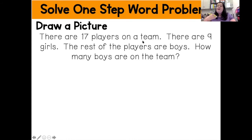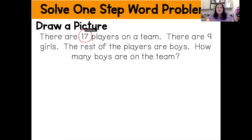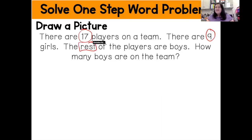Now that I've read my word problem one time, I'm going to use the cubes method to dissect it by going over it again. This time I'm going to be circling my numbers, underlining my question, and boxing in any clue words that will tell me whether I'm going to be adding or subtracting. So there are 17 players on the team — I'm going to circle the number 17. There are nine girls. The rest — I'm going to box in the clue word 'rest' because that's a very important clue word.